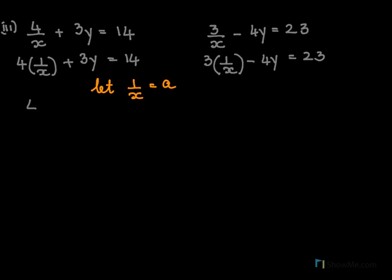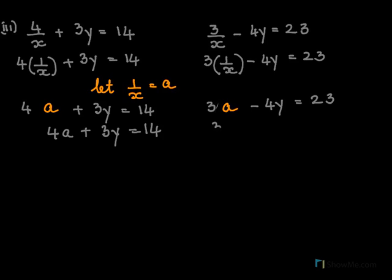So here we will have 4, 1 by x. Now we need to substitute for 1 by x as a. So wherever there is 1 by x we get it out and we will put here as a. Here 2, 1 by x, we need to get that out and we need to put this a. So our new equations now are 4a plus 3y equals 14, and here 3a minus 4y equals 23.